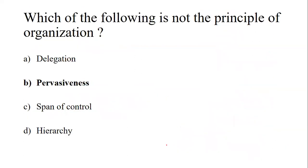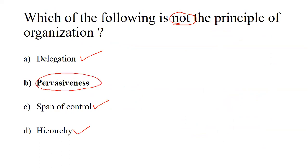So the question asks which is NOT a principle of organization. Delegation, span of control, and hierarchy are all principles of organization. Therefore, the correct answer is option B: pervasiveness.